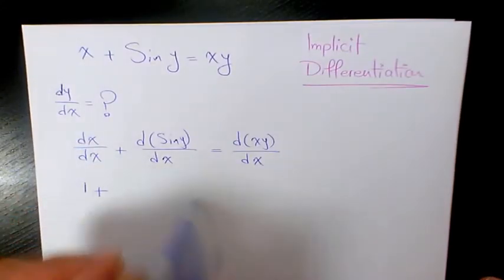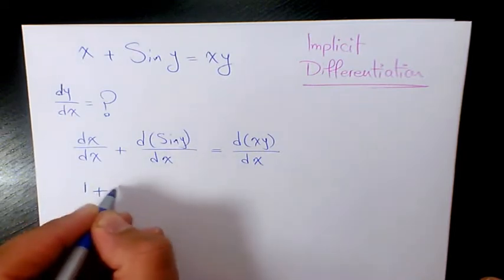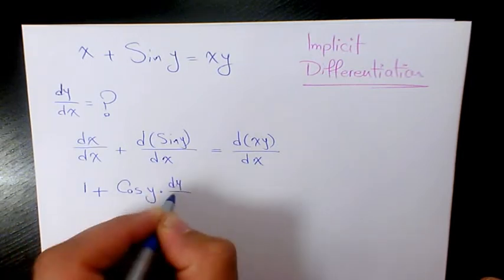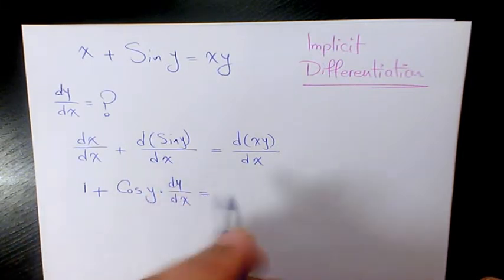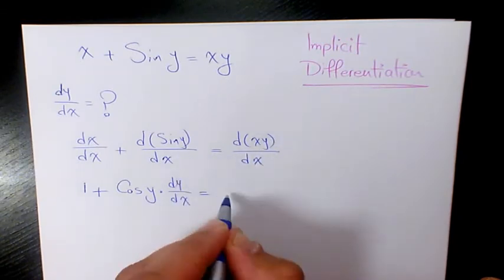dx/dx equals 1. The derivative of sine y with respect to x is cosine y times dy/dx. For xy, we need to use the product rule. The derivative of x is 1.